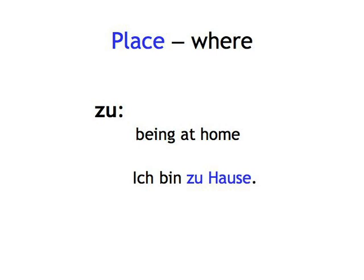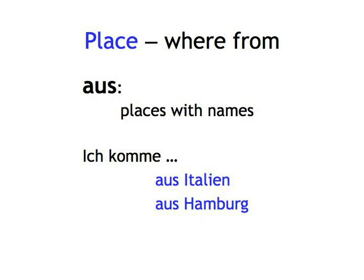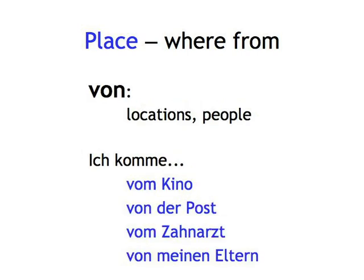Place — where from. If you're talking about places with names, use 'aus': ich komme aus Italien, aus Hamburg. If you're talking about locations or people, use 'von': ich komme vom Kino, von der Post, vom Zahnarzt, von meinen Eltern. Of course, you can place things in cupboards, on tables, or hide things under your bed, but we can't give you the prepositions for all possible places here. We'll find out more about how to hang things on walls or lock them into a safe in the module about two-way prepositions.